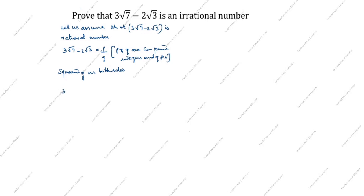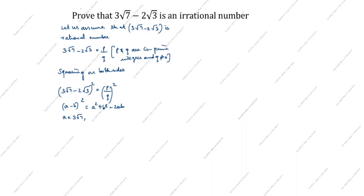Next step: (3 root 7 minus 2 root 3) whole square equals (p divided by q) whole square. This is in the (a minus b) whole square format. The formula is a squared plus b squared minus 2ab. Here, a is equal to 3 root 7 and b is equal to 2 root 3.